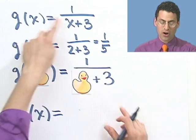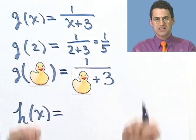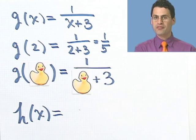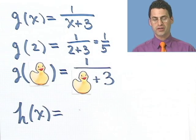Once I write g of x equals this, that means that I'm just calling this whole thing g. It's the g machine. The g machine, in this case, is 1 over x plus 3. The f machine from earlier on was 2x squared minus 1, and so on.